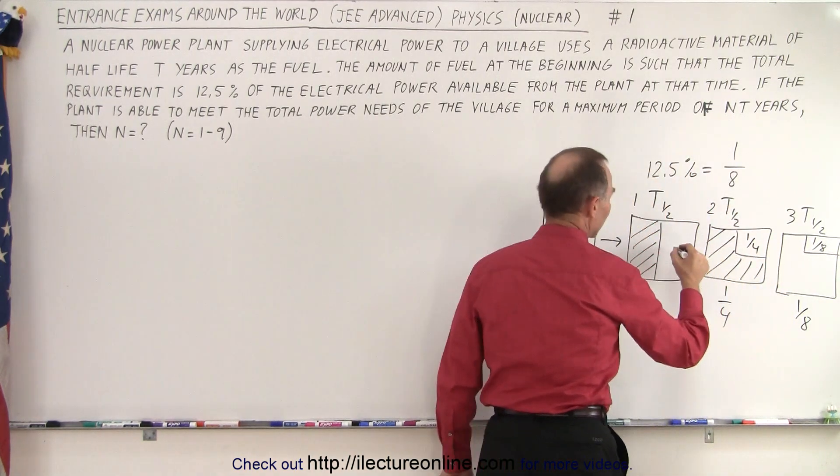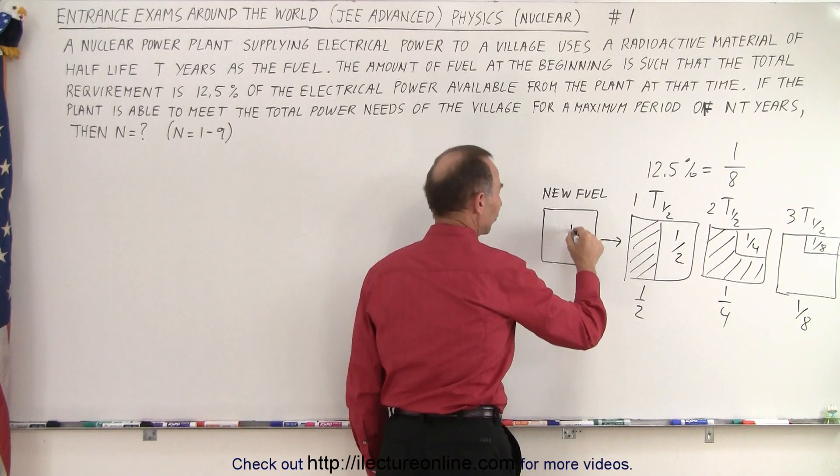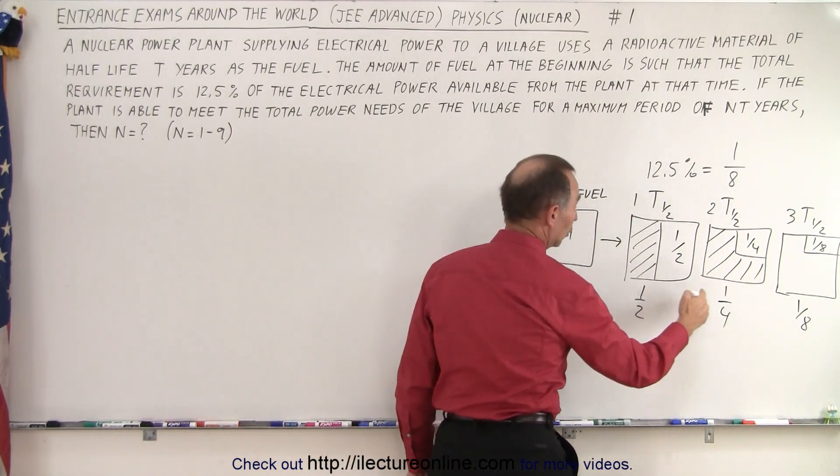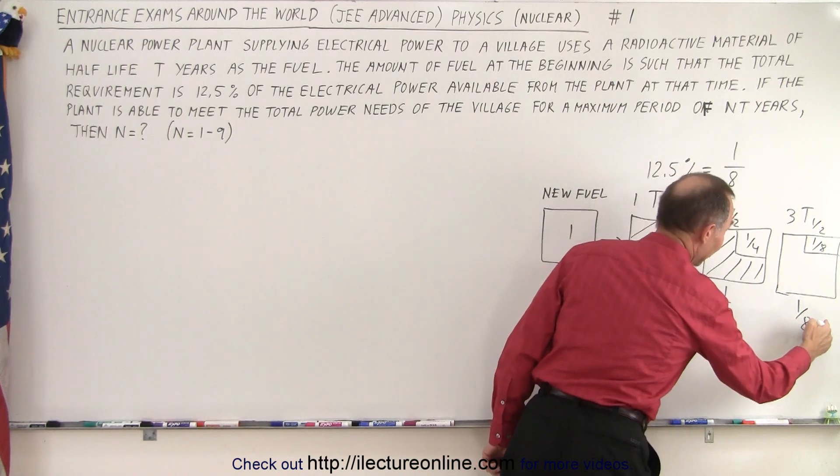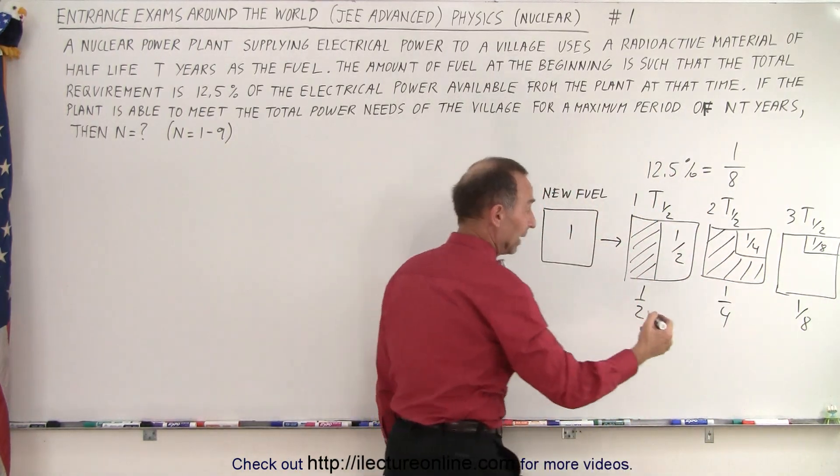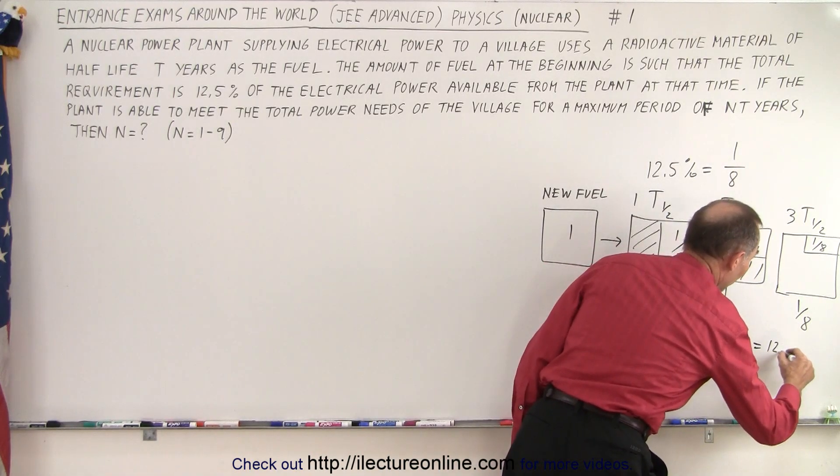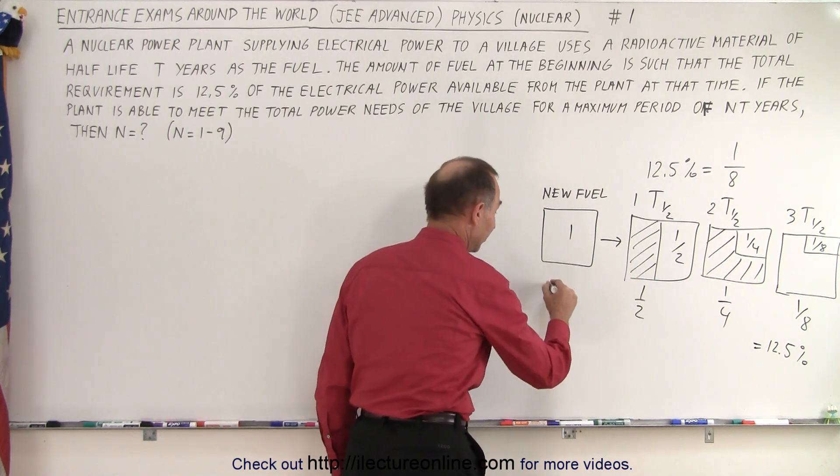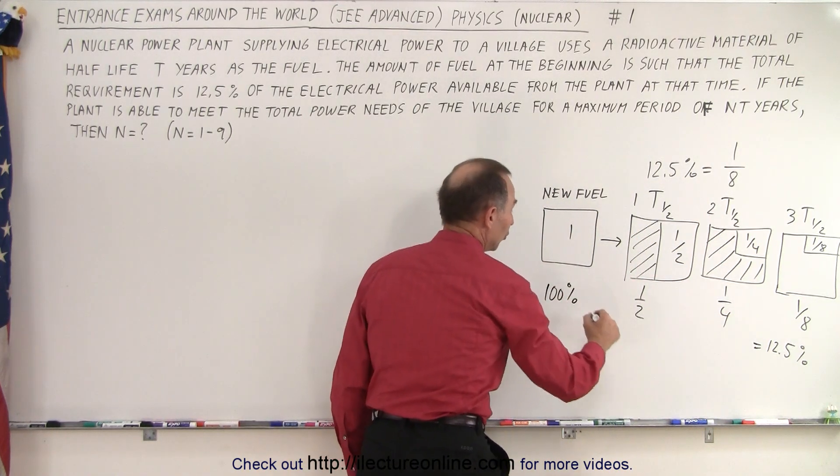We have one eighth left here, one quarter left here, a half left here, and the whole thing at the start. So we realize that after one, two, three half-lives you're down to one eighth of the original fuel, in other words one eighth equals 12.5 percent.